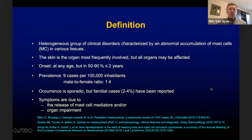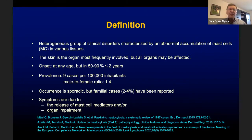Mastocytosis refers to a heterogeneous group of clinical disorders characterized by an abnormal accumulation of mast cells. The skin is the organ most frequently involved, but all organs may be affected. Mastocytosis may occur at any age, but onset is usually before age 2 years. Prevalence is about 9 cases per 100,000 inhabitants, and the male-to-female ratio is about 1.4. Occurrence is usually sporadic, but familial cases have been reported, and symptoms are due to release of mast cell mediators or organ impairment.